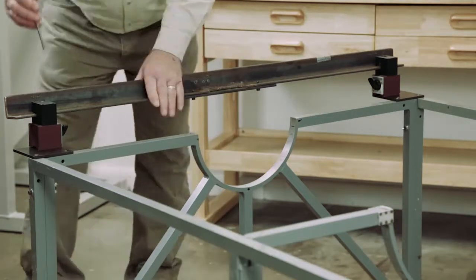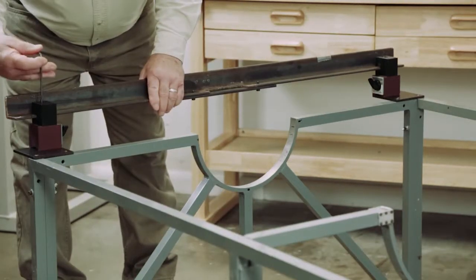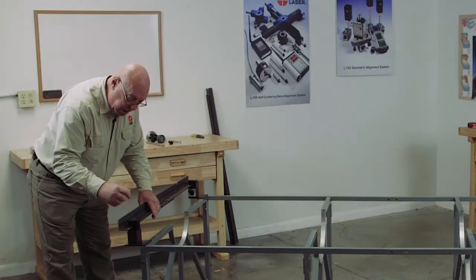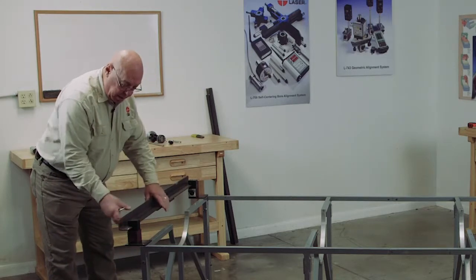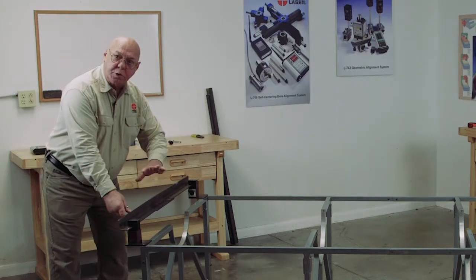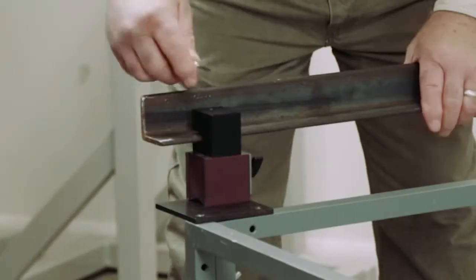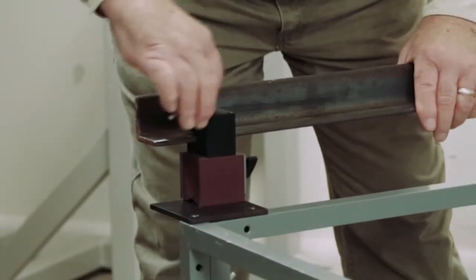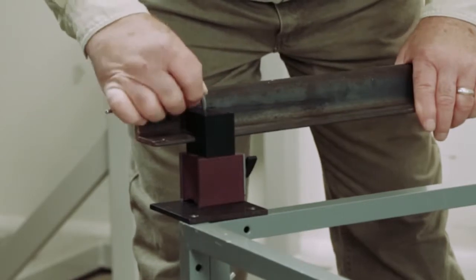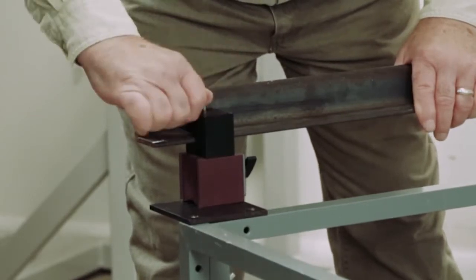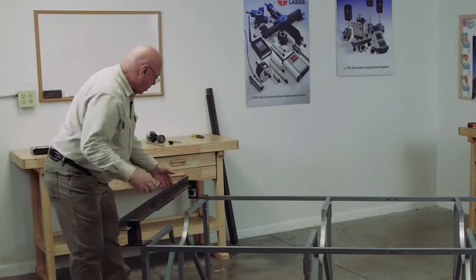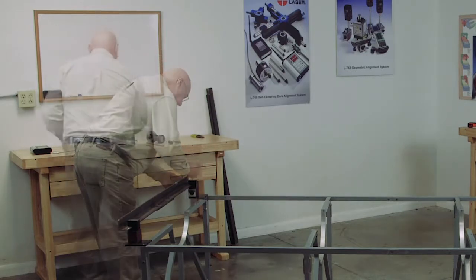Then we take the Allen wrench and we're going to tighten the straight slot first. The reason this has a straight slot on a Pac-Man is this angle iron could have some twist to it. So when we tighten this, that one may not be quite parallel. So we tighten the straight slot first so the Pac-Man magnet will go to the contour of the angle.